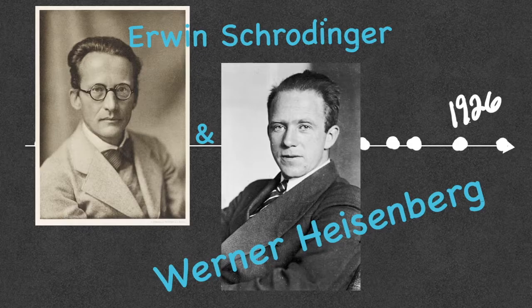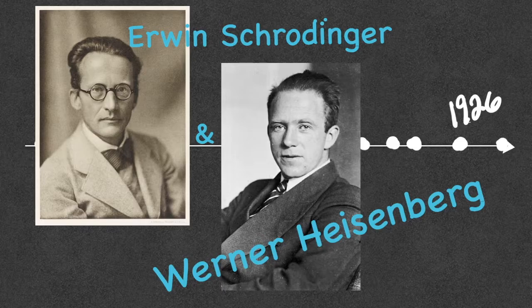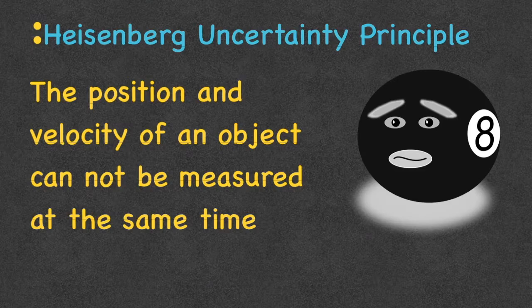Schrödinger and Heisenberg are both physicists and mathematicians, and they applied many math equations to atomic structure. What they realized was that dual property of the electron — electrons are made of energy and matter. How can they be both at the same time? They must act very strangely because they can behave like both things simultaneously. From this, we get Heisenberg's uncertainty principle.